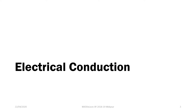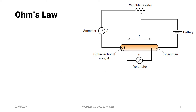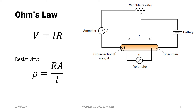First, let's look at electrical conduction. For electrical conduction, it's governed by the physical law known as Ohm's law. Ohm's law, from physics, is V is equal to IR. The resistivity from this statement can be obtained from your resistance, where resistivity is equal to resistance times the cross-sectional area of your material, over the length in which your material is conducting electricity.